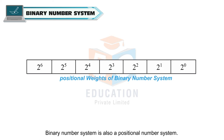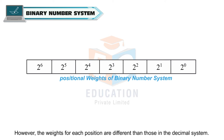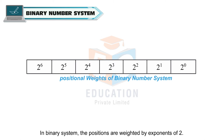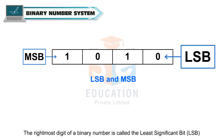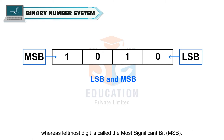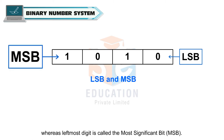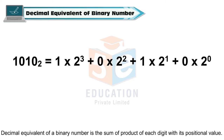Binary number system is also a positional number system. However, the weights for each position are different than those in the decimal system. In the binary system, the positions are weighted by exponents of 2. The rightmost digit of a binary number is called the least significant bit or LSB, whereas the leftmost digit is called the most significant bit or MSB.